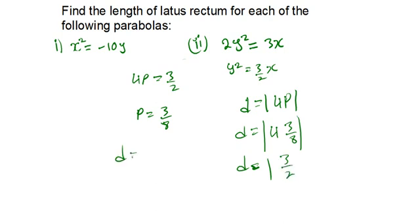So our distance equals 3 over 2, which you can also write as 1.5 if you want to put it in decimal places.